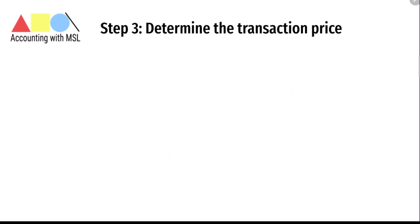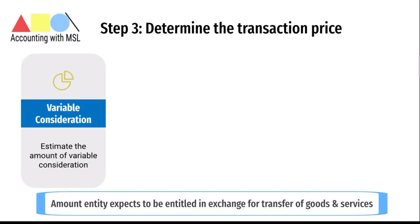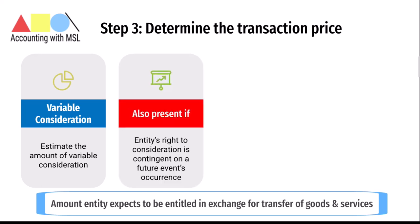Step three is to determine the transaction price. IFRS 15 determines the transaction price as the amount the entity expects to be entitled to in exchange for the transfer of goods and services. When making this determination, an entity is sometimes required to consider past customary business practices. Where a contract contains elements of variable consideration, the entity will estimate the amount of variable consideration to which it expects to be entitled. Variable consideration can arise as a result of discounts, rebates, refunds, credits, price concessions, incentives, performance bonuses, penalties or other similar items.